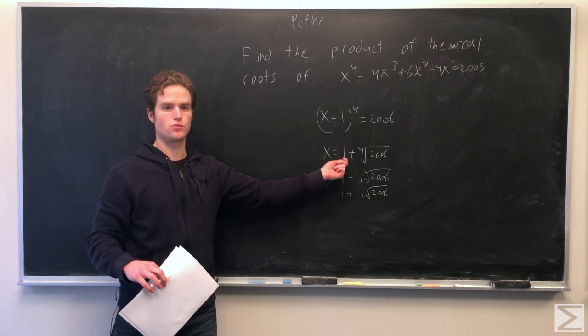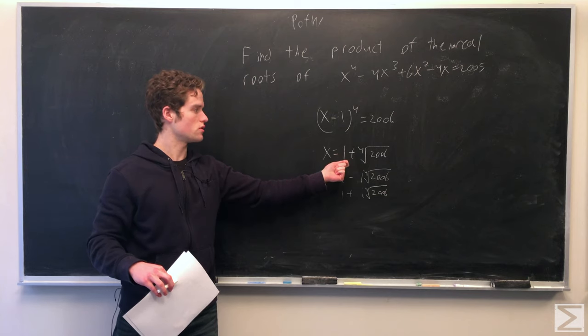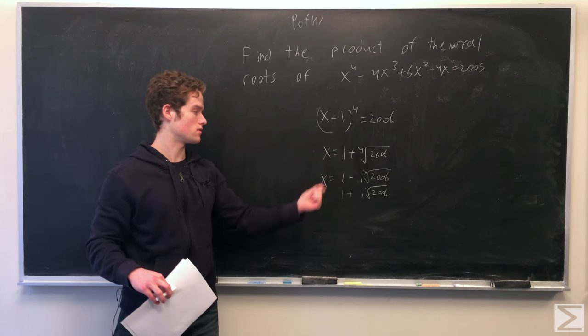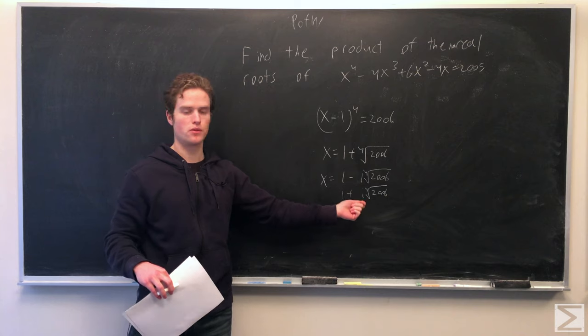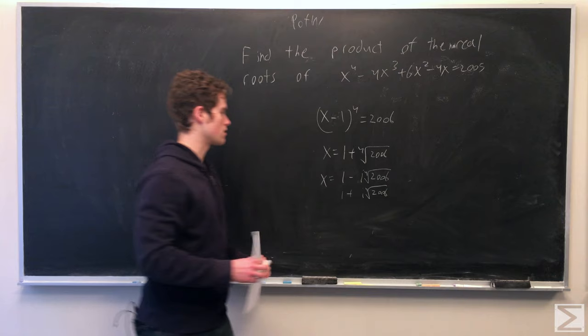So two of these roots will be real. There's the plus and the minus real roots, real 4th roots of 2006. And there's also minus i and plus i, 4th root of 2006. So now we just need to multiply these two together and we get...